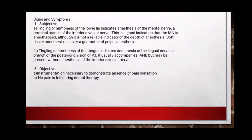The signs and symptoms are both subjective and objective. Tingling or numbness of the lower lip indicates anesthesia of the mental nerve, a terminal branch of the inferior alveolar nerve. This is a good indication that the IAN is anesthetized, although it is not a reliable indicator of the depth of anesthesia — soft tissue anesthesia is never a guarantee of pulpal anesthesia. Tingling or numbness of the tongue indicates anesthesia of the lingual nerve, a branch of the posterior division of V3. It usually accompanies IANB but may be present without anesthesia of the inferior alveolar nerve. Objectively, instrumentation is necessary to demonstrate absence of pain sensation, and no pain is felt during dental therapy.